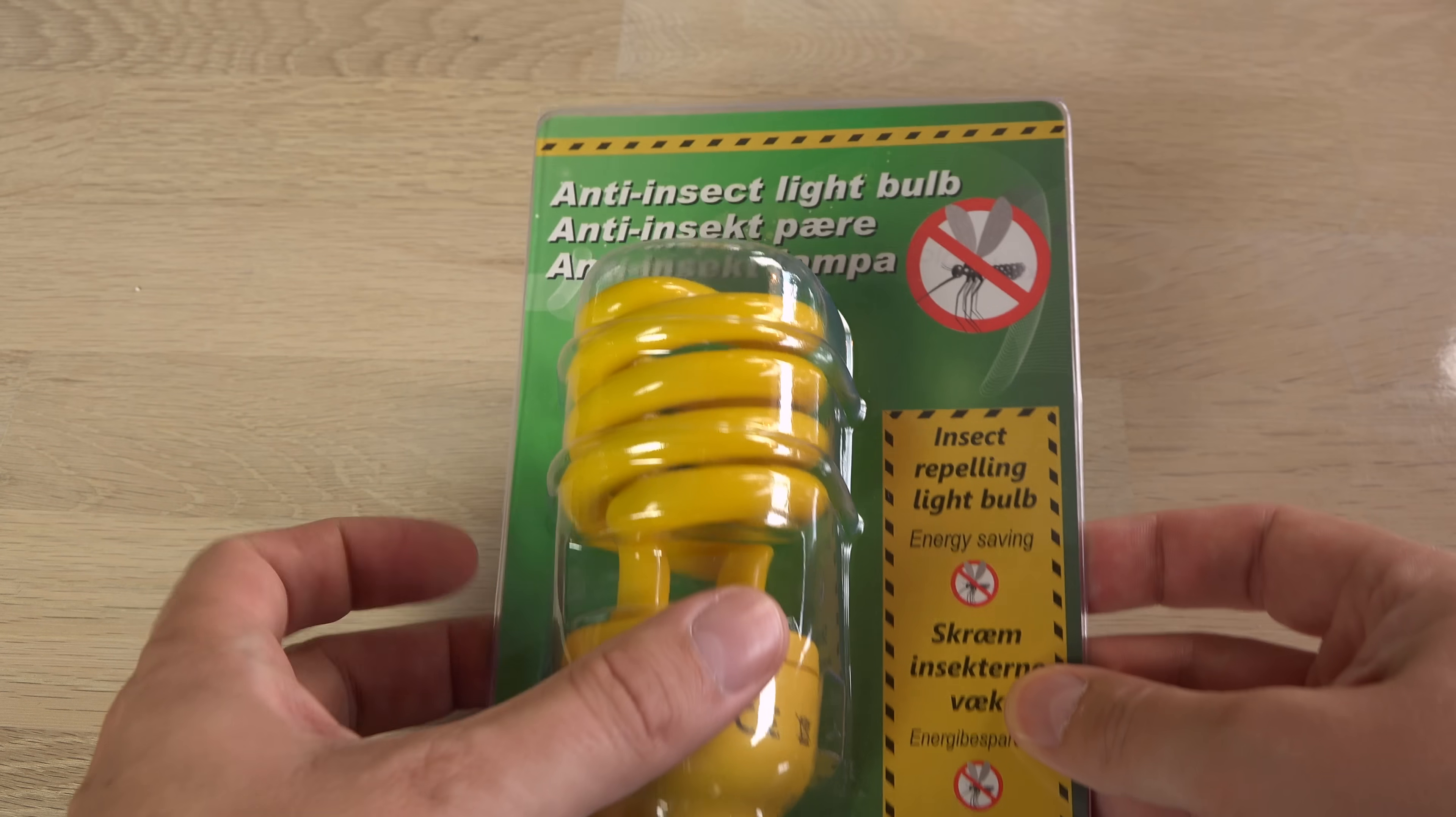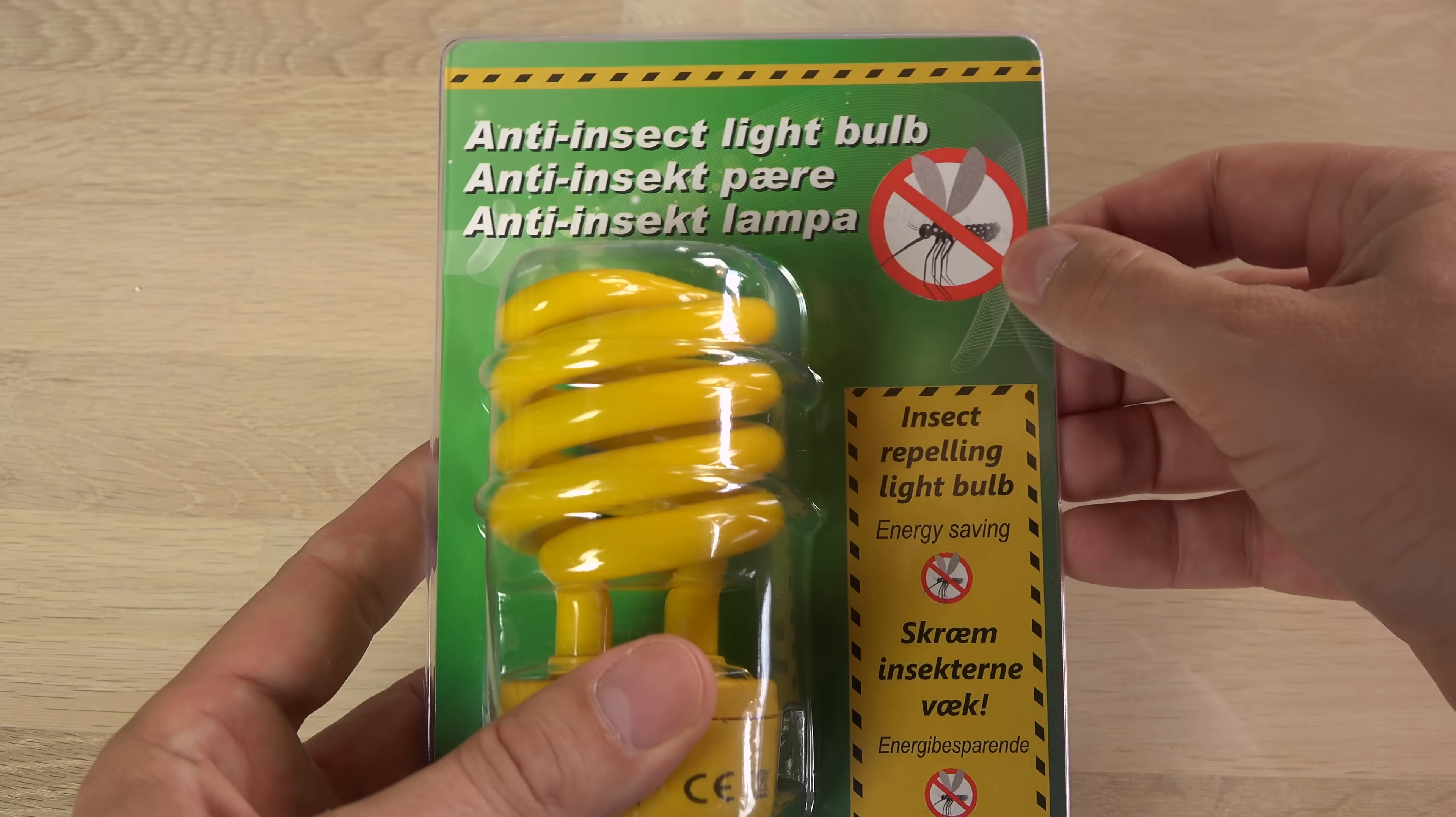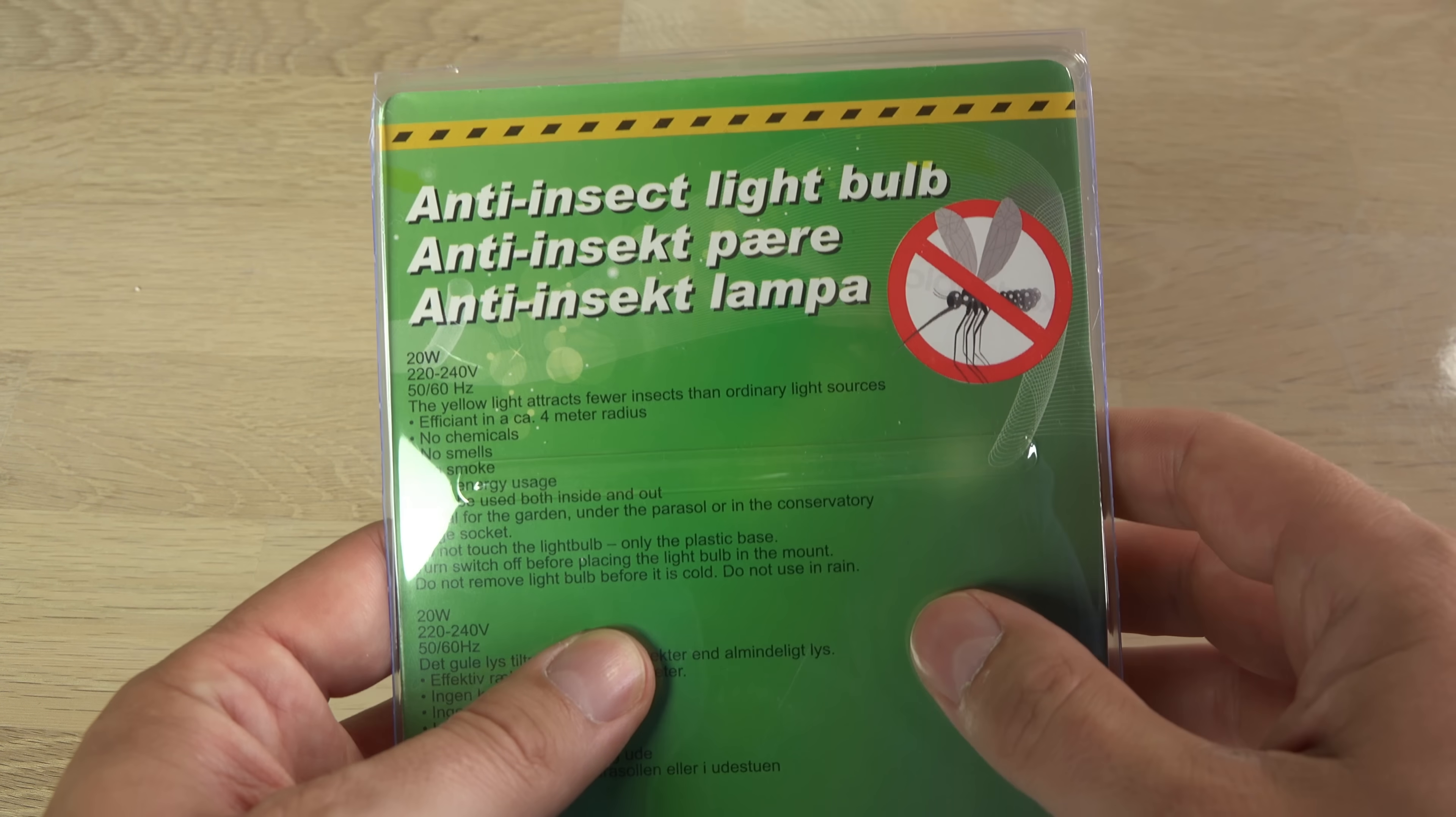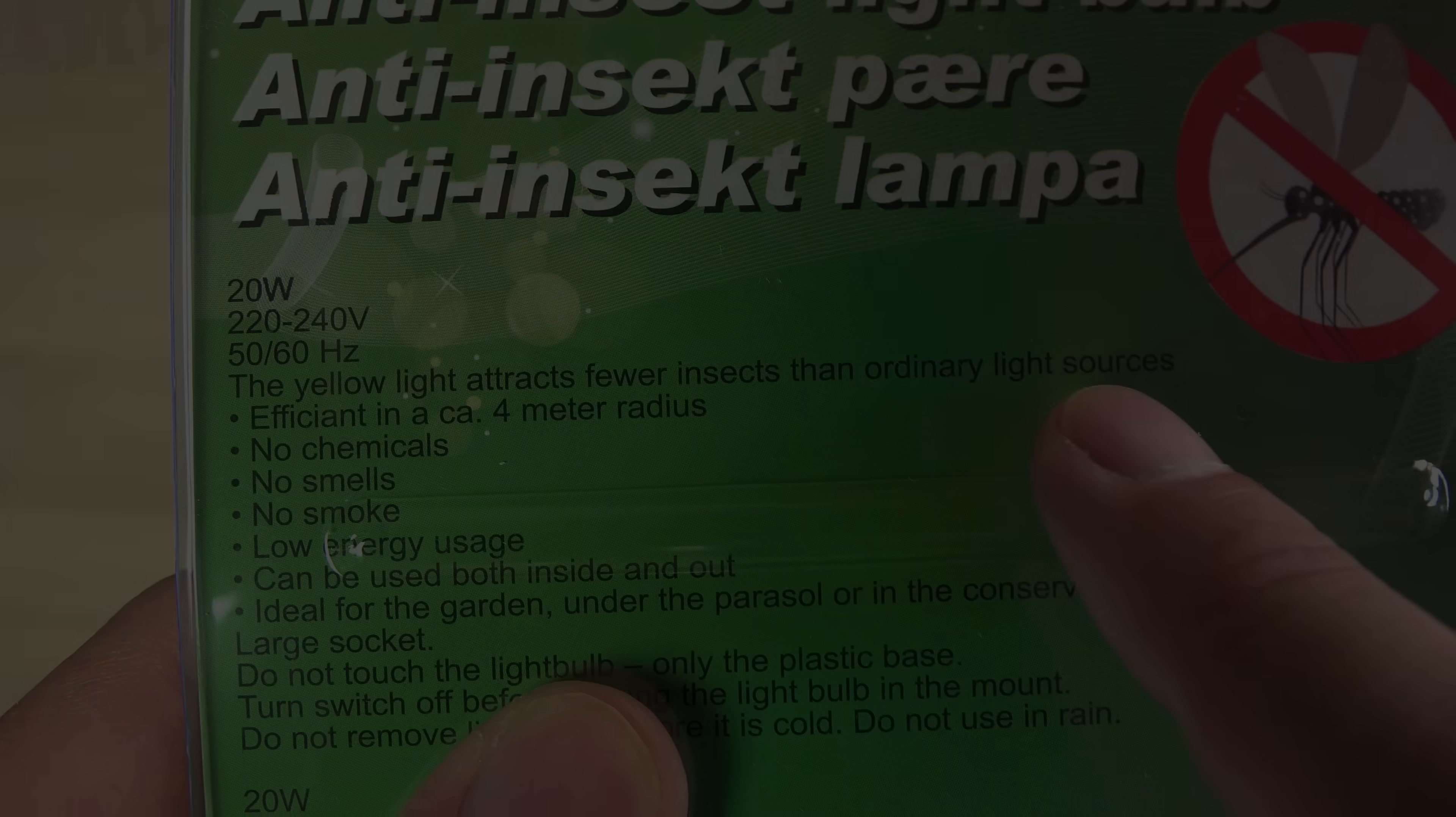Here's a little bonus for hanging on to the end. Look at the advertising on this one. On the front it clearly says anti-insect and insect repelling. On the back it says it attracts less than white light. English is not my first language but repel and attract less isn't quite the same, right? Thanks for watching.